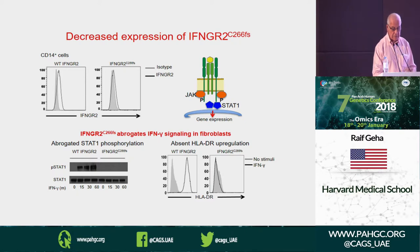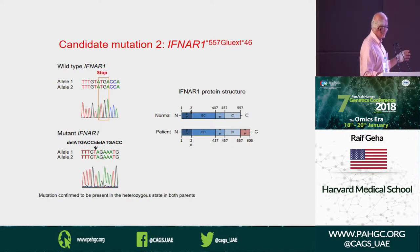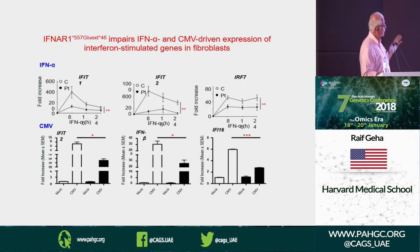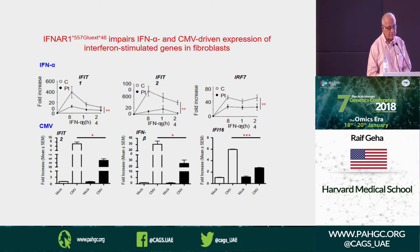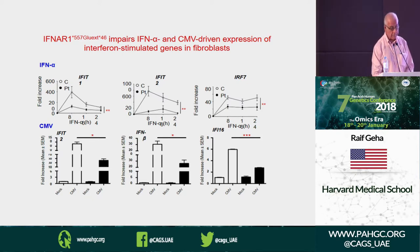The control responds to interferon treatment by expressing MHC class 2 on fibroblasts, but not the patient — confirming the interferon-gamma receptor 2 defect. The other gene is a novel mutation that destroys the stop codon, giving an extra piece to the protein. It is homozygous and parents are carriers. This also signals via STAT1 and STAT2 phosphorylation, both of which are diminished. Interferon-alpha-driven antiviral genes were significantly reduced in the patient.